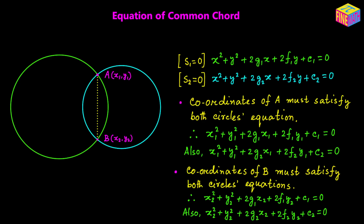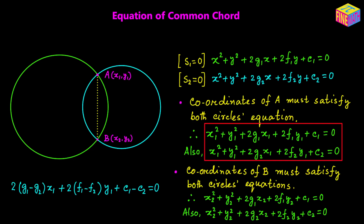Now I am going to take the first set of equations — the ones in the red box — and subtract the second from the first. The x sub 1 squared terms cancel, as do the y sub 1 squared terms. We are left with 2 times (g sub 1 minus g sub 2) times x sub 1 plus 2 times (f sub 1 minus f sub 2) times y sub 1 plus (c sub 1 minus c sub 2) equals 0. That is the result of subtracting the second equation from the first in the red box.